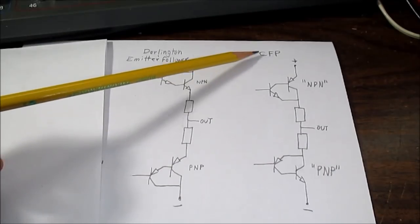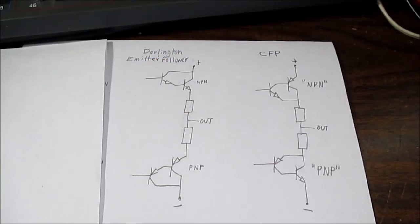Let's see why the complementary feedback pair is favored. Well, in this configuration, remember we had a little bit less gain. But this circuit gives a lot more feedback to itself. And it makes it quite a bit more linear. And linearity means less distortion.